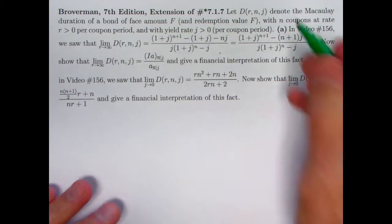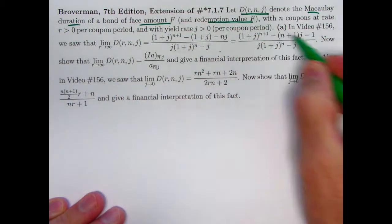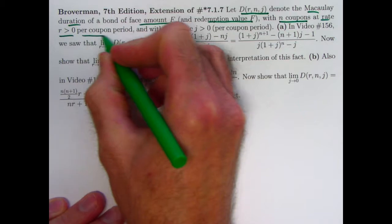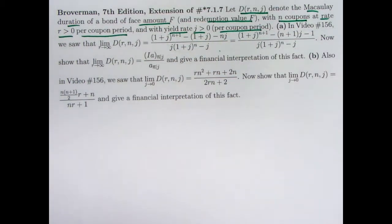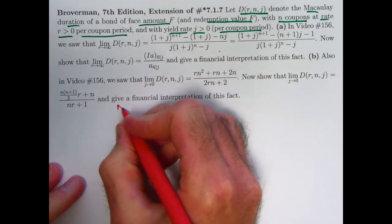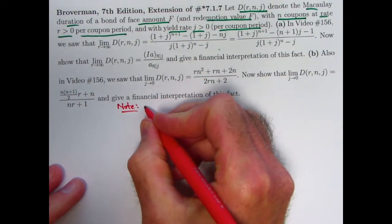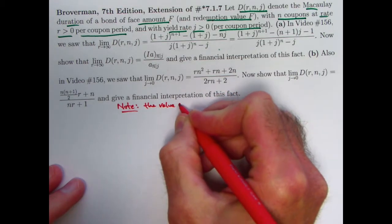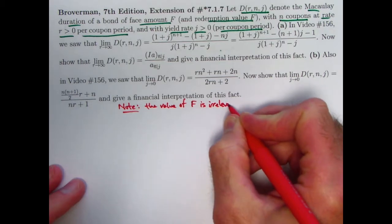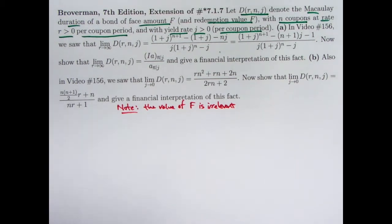So here we have it. Same setup as the last time. D(r, n, j) is a function giving you the Macaulay duration of a bond of face amount F and redemption value F. That's assumed in the background here. Function of the number of coupons and coupons at rate r per coupon period and yield rate j per coupon period. Do note here that there is no F shown in this notation for the duration and that is because F is irrelevant. I think that's worth noting right from the start here because in what I do in this video I'm going to just essentially take F to equal one to keep it a little simpler.